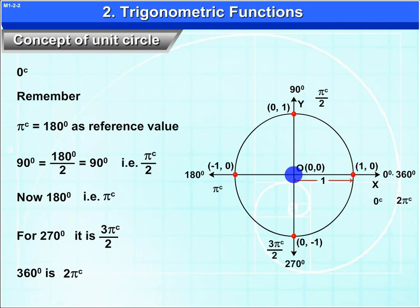So, on the positive x-axis, we have (1, 0) in degrees. So, 0 degrees, 360 degrees. And in radians, we have 0 radians and 2 pi radians.